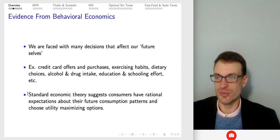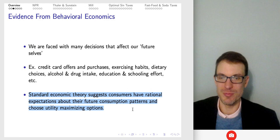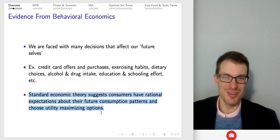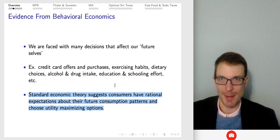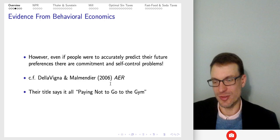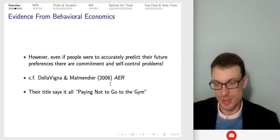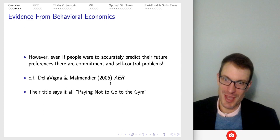So what's the issue? Standard economic theories suggest that consumers have rational expectations about their future consumption patterns and should choose the utility-maximizing options. Is that really what we do? I don't think so. I don't believe that all of my past choices were optimal relative to my present self, and I don't believe that my present choices are optimal relative to my future self. The question is, how can we get better at decisions when we're living and experiencing the present, but ultimately living and experiencing the future, which is always becoming the present?